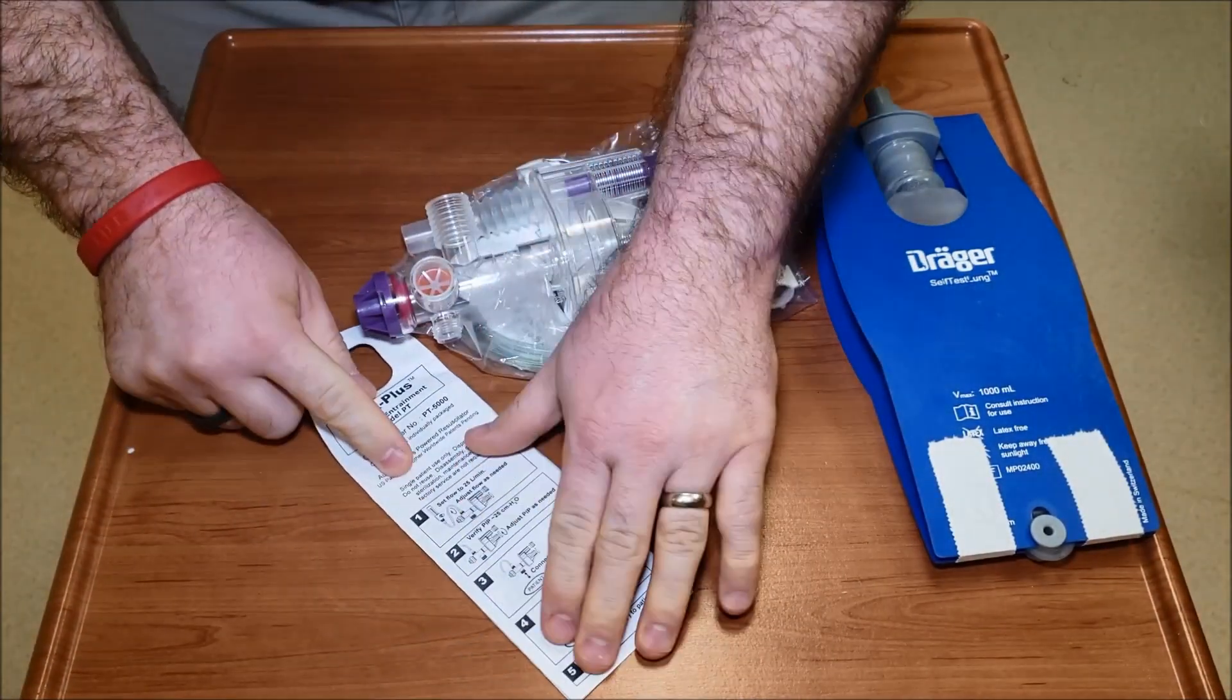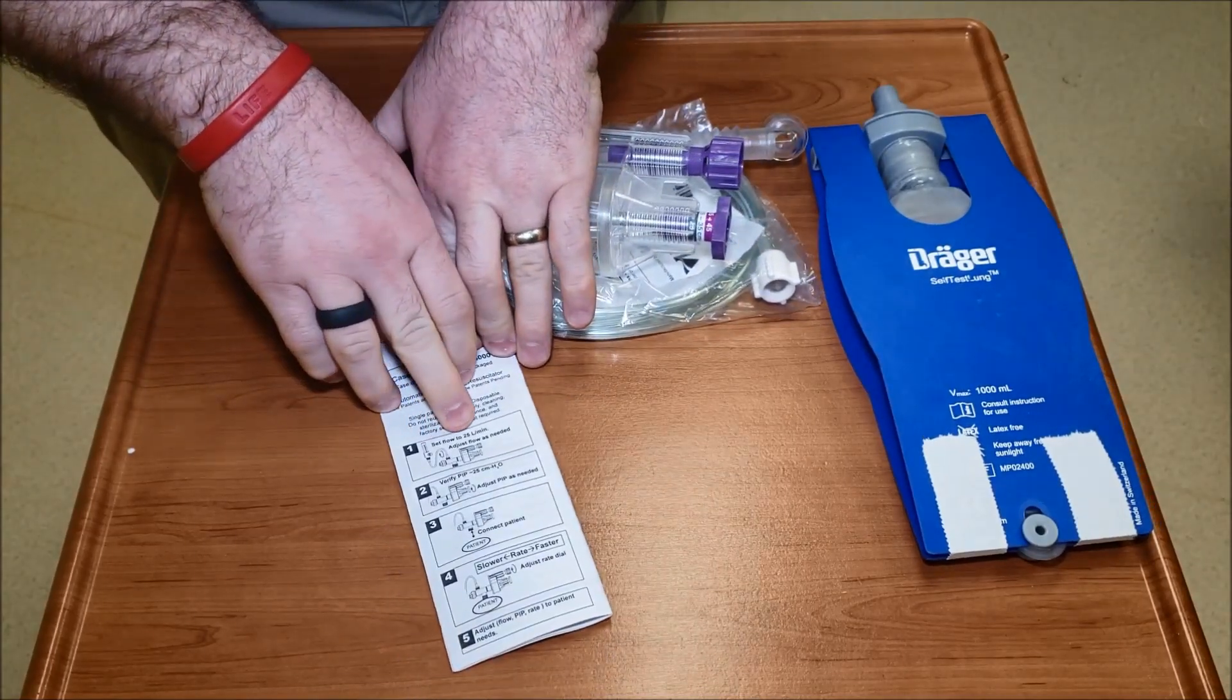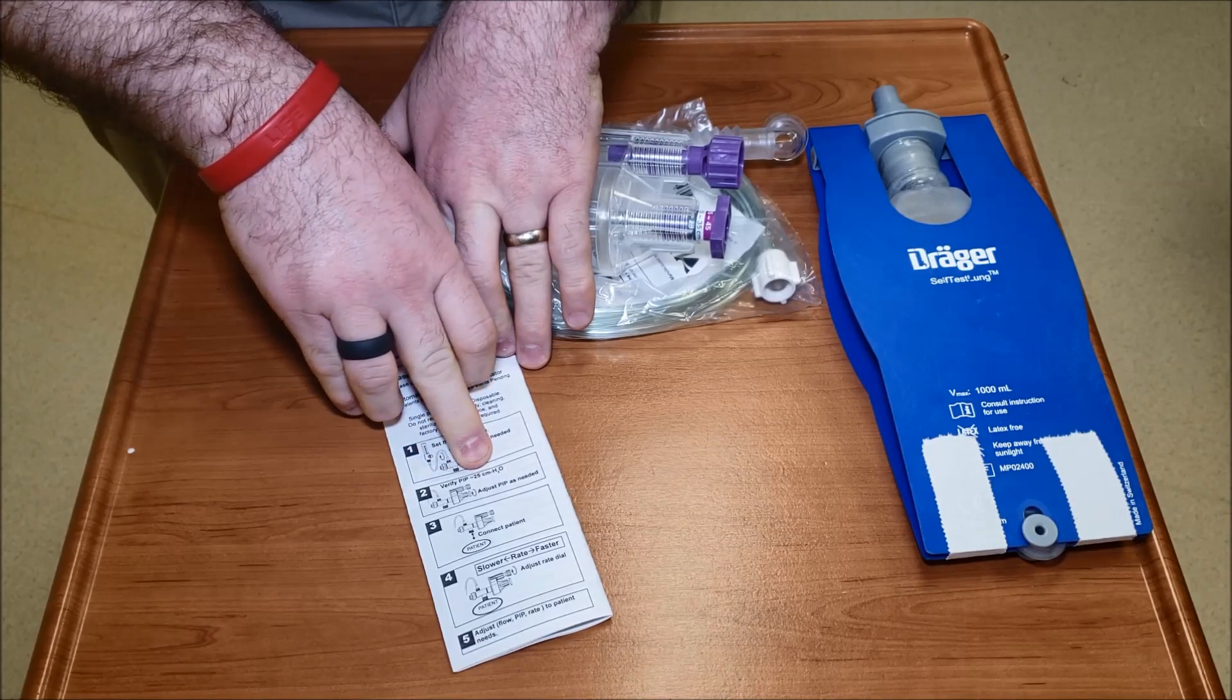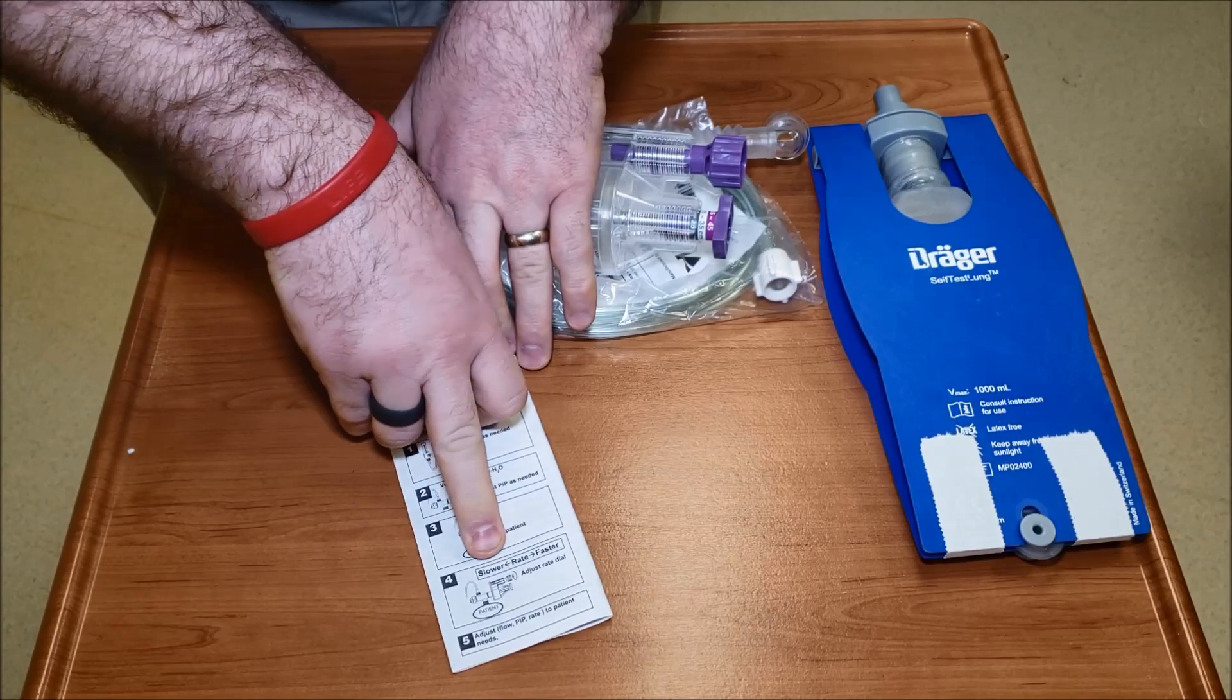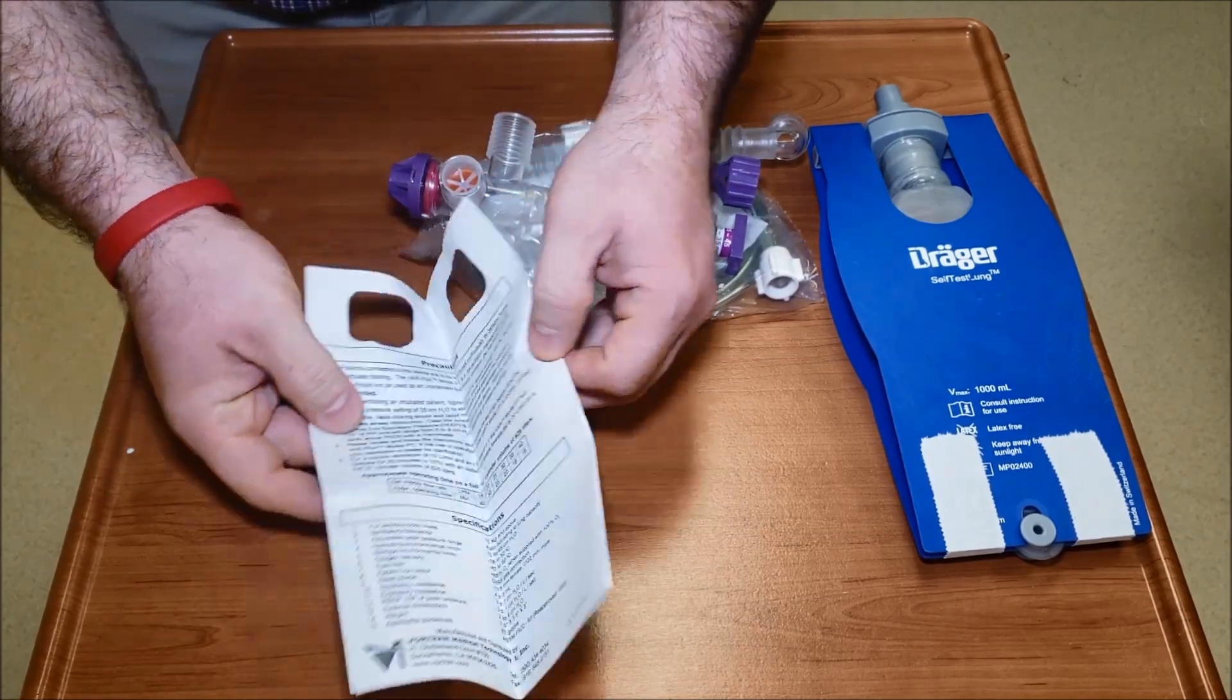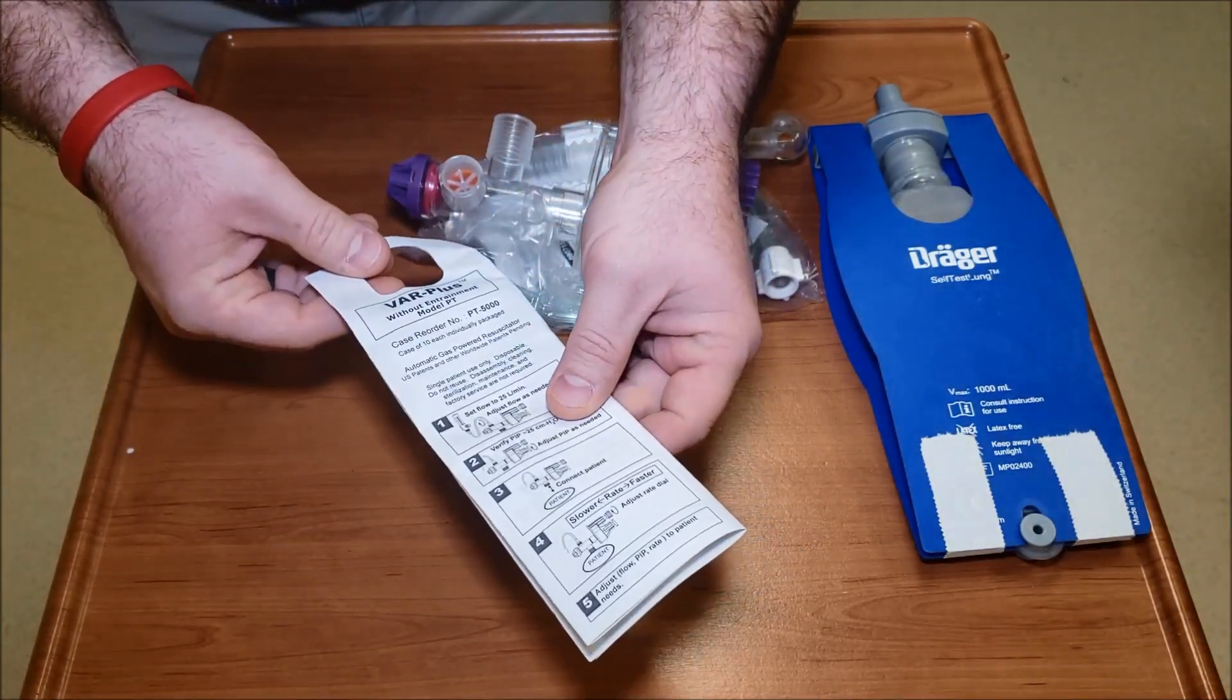This is just so that in a pinch anybody could set this thing up. You can see we have: one, set flow to 25 liters per minute; adjust the PIP to 25 approximately; connect the patient; and then you can change the rate. We'll go through all this stuff, but this is a little generic kind of instruction sheet for how to use it.